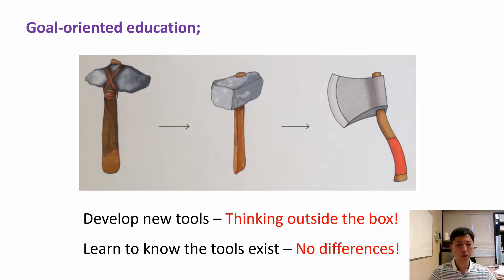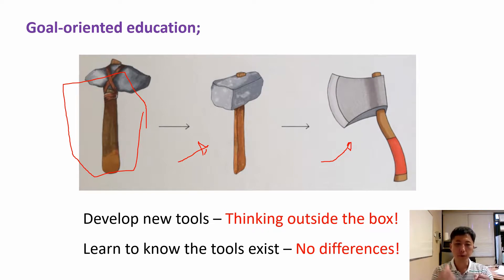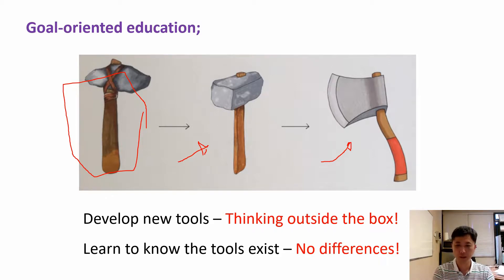Goal-oriented education is like starting with one tool and making new tools as you need them. You create new tools based on primary tools by improving them. If you created these new tools, you are thinking outside — you have a lot of stories to tell. It's like traveling somewhere that people have never gone; when you come back, you have a lot of stories.